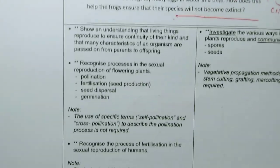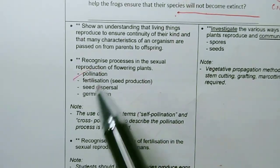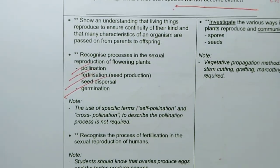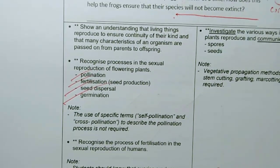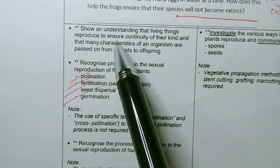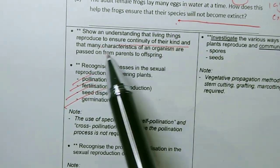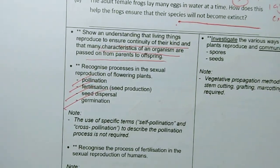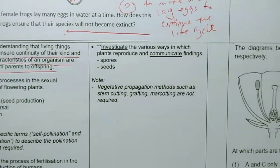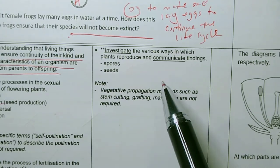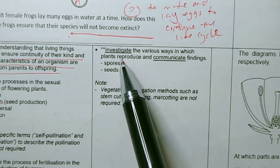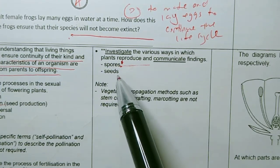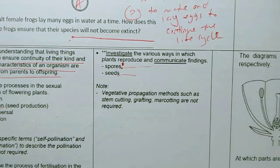Now, understanding cycles as I mentioned earlier, you've got to know about these processes of pollination, fertilization, seed dispersal, germination. And you must know that living things reproduce to ensure the continuity of their kind, and many characteristics of the organism pass from parents to their offspring. We will assess you on how plants are reproduced. It can be by spores for non-flowering plants, or by seeds for flowering plants.